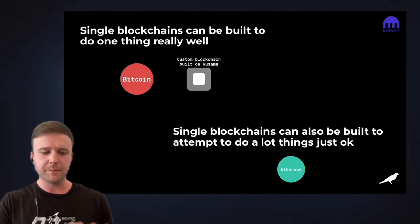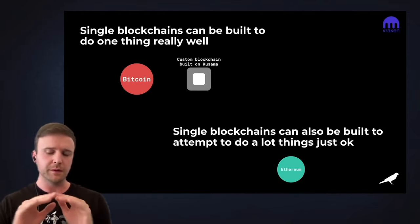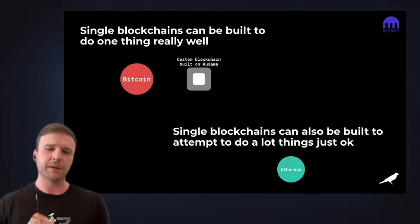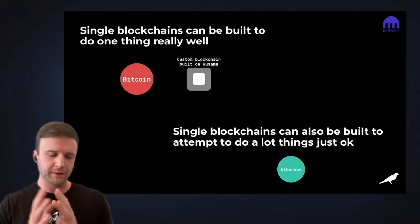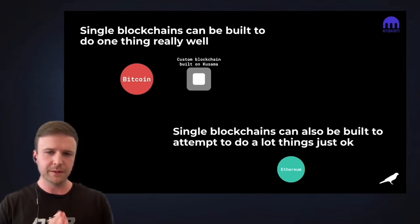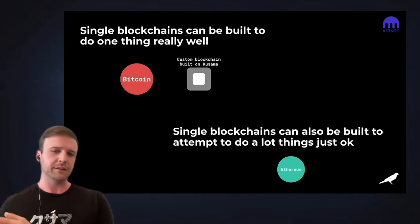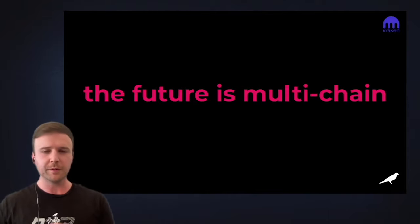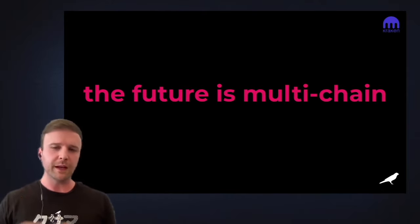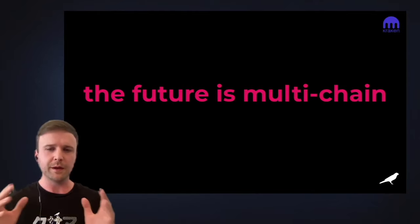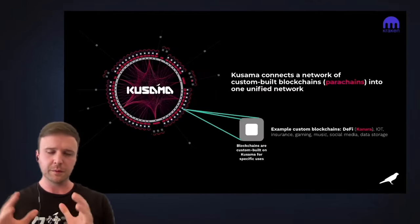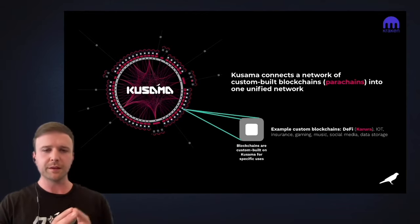We've also seen single blockchains attempting to do a massive variety of things just okay. In Ethereum's case, DeFi has been an emerging, highly successful subset of use cases, but it's having trouble scaling just due to the tech. Still, these single isolated blockchains are trying to do too many things at once. We at Acala, and the Polkadot and Kusama team, believe that the future is multi-chain — built with specialized blockchains for specific purposes.